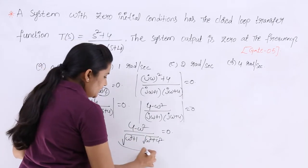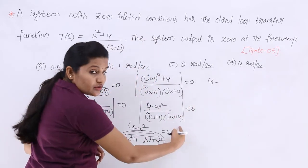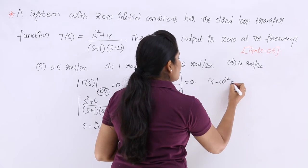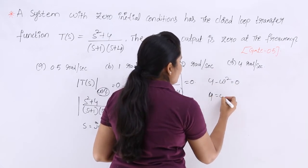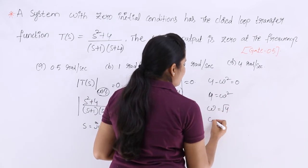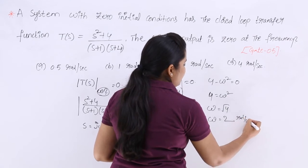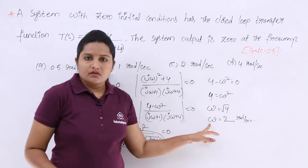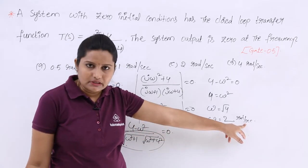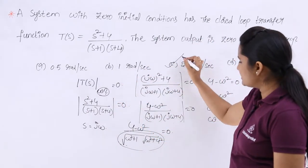Setting the expression equal to zero, the denominator goes to the other side and we get: 4 − ω² = 0, so ω² = 4, and therefore ω = √4 = 2 radians per second. The answer is option C, which is 2 radians per second.